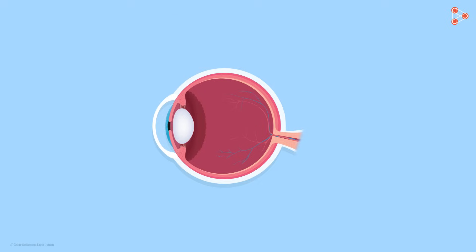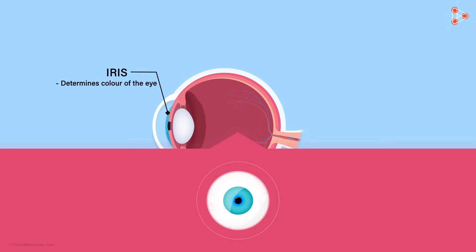Let's now talk about the things present inside. Behind the cornea, there is a dark muscular structure called the iris. Iris determines the color of the eye. For instance, when we say that a person has blue eyes, it means that the color of the iris of the person's eye is blue.